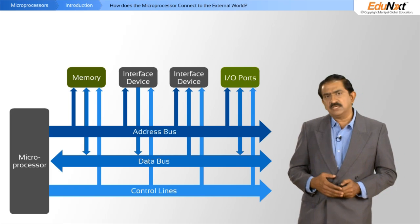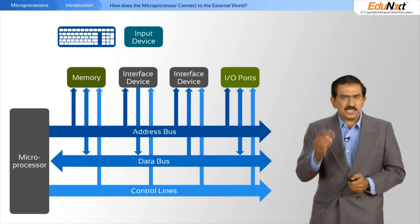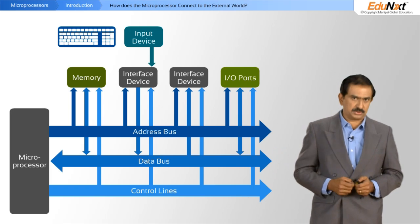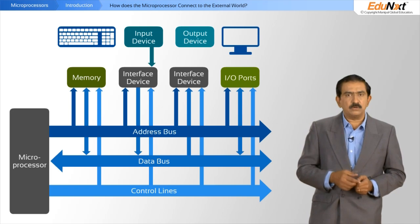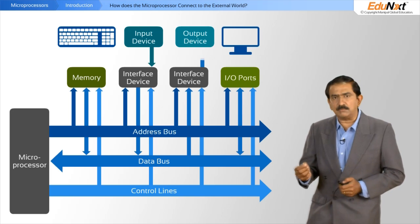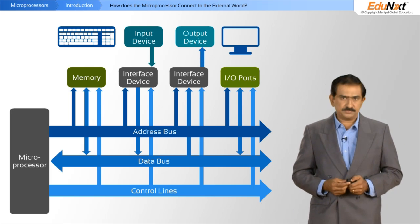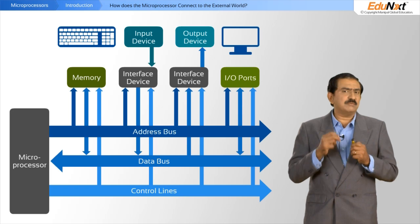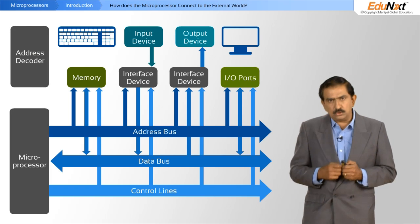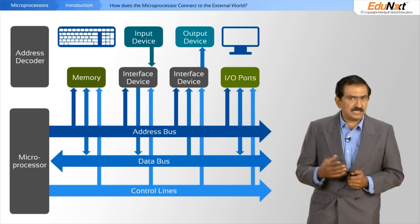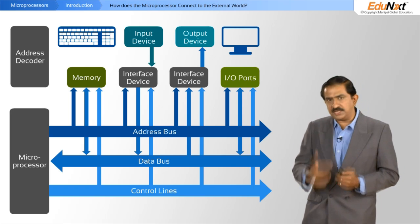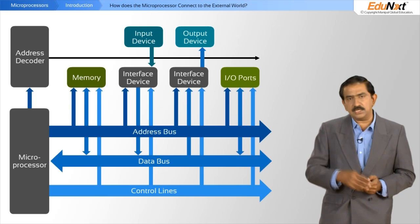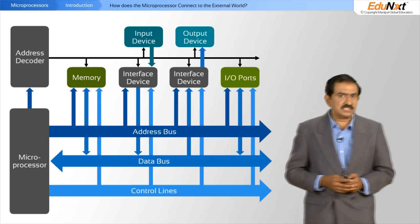If you take an interface device — say an input device like a keyboard — you would see from the diagram that the data bus flows into the processor. On the other hand, if you have an output device like a monitor or an LED display, the data bus comes out of the processor into the output device. This in itself is not enough — you also need something called an address decoder. The address decoder takes address lines, read signals, and write signals from the processor, decodes them accordingly, and triggers the various peripheral devices connected to it. This is how the processor knows whether it is talking to the keyboard or the display.